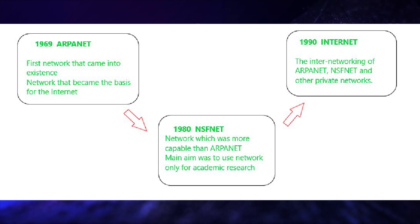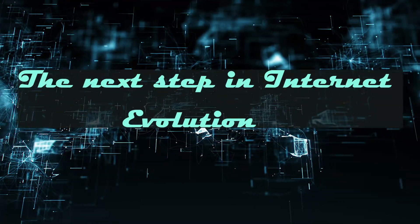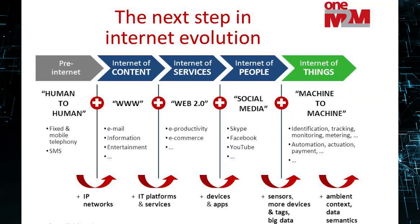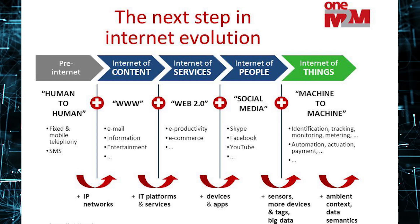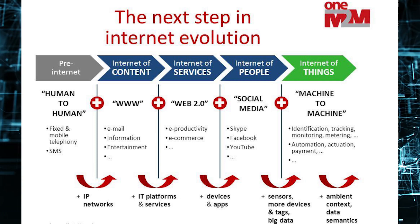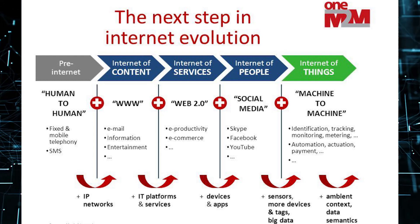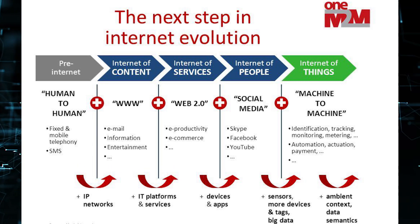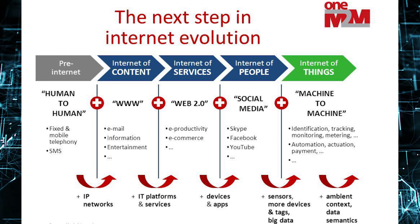Then the major development — the Internet — came into the market in 1990, networking ARPANET, NSFNET, and other private networks. Internet use can be classified into five areas: pre-internet, internet of content, internet of services, internet of people, and internet of things. Pre-internet is the human-to-human connection before the internet. Internet of content, after the internet arrived, involved the World Wide Web, email, and entertainment. Internet of services is Web 2.0 — e-commerce and e-productivity ruling today's market.